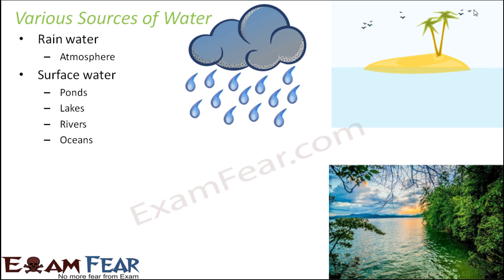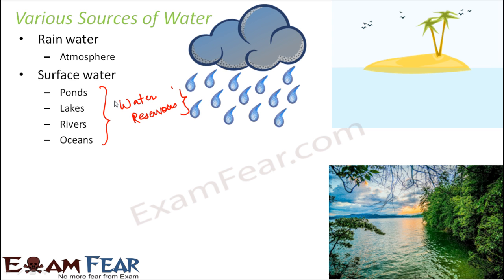Next is surface water. There are many water bodies located on the surface of the earth — for example, ponds, lakes, rivers, and oceans. Ponds are small water bodies, oceans are very big, and rivers are smaller than oceans but bigger than ponds. They may vary in size, appearance, and behavior, but all of them contain water and act as water reservoirs — vessels that store water. Together, they form surface water.